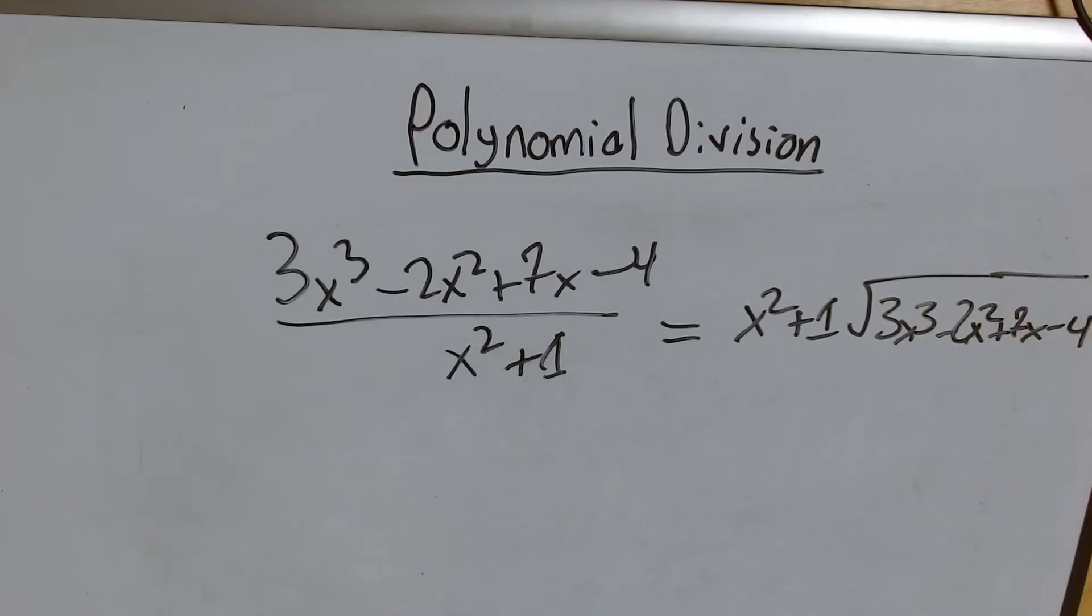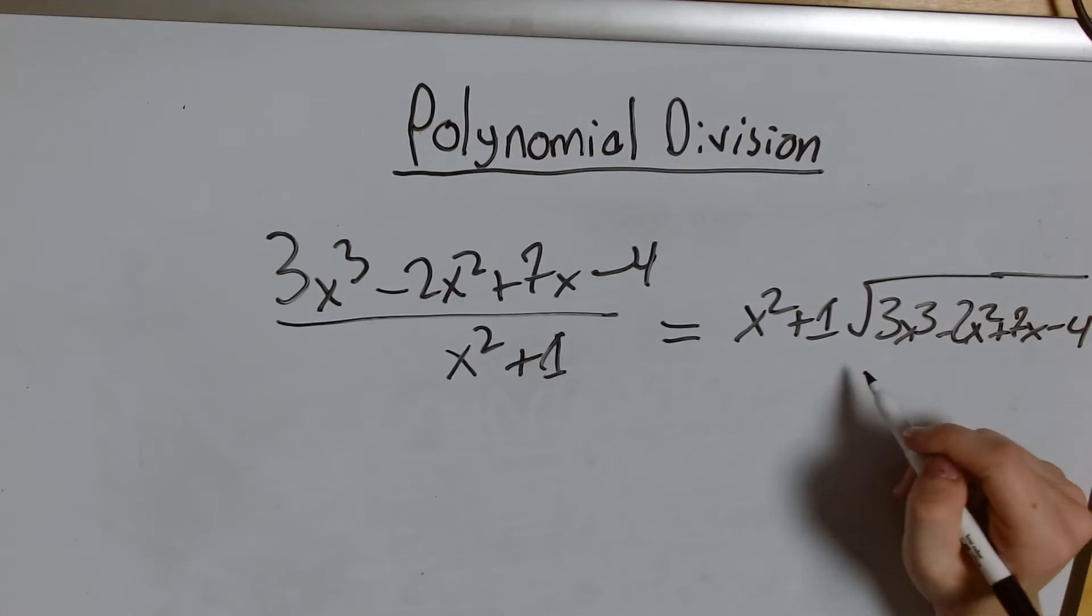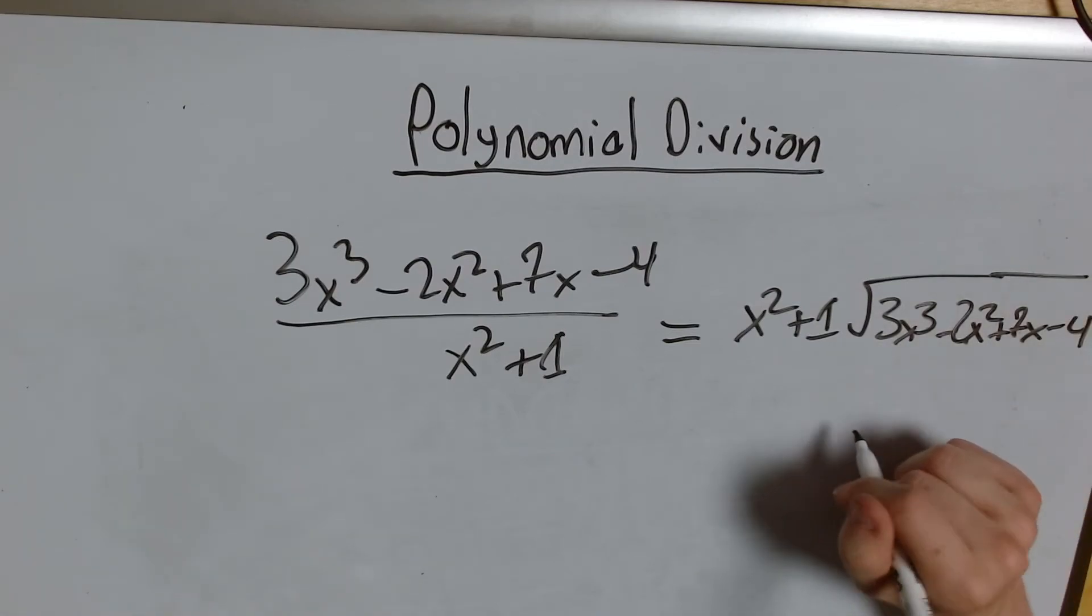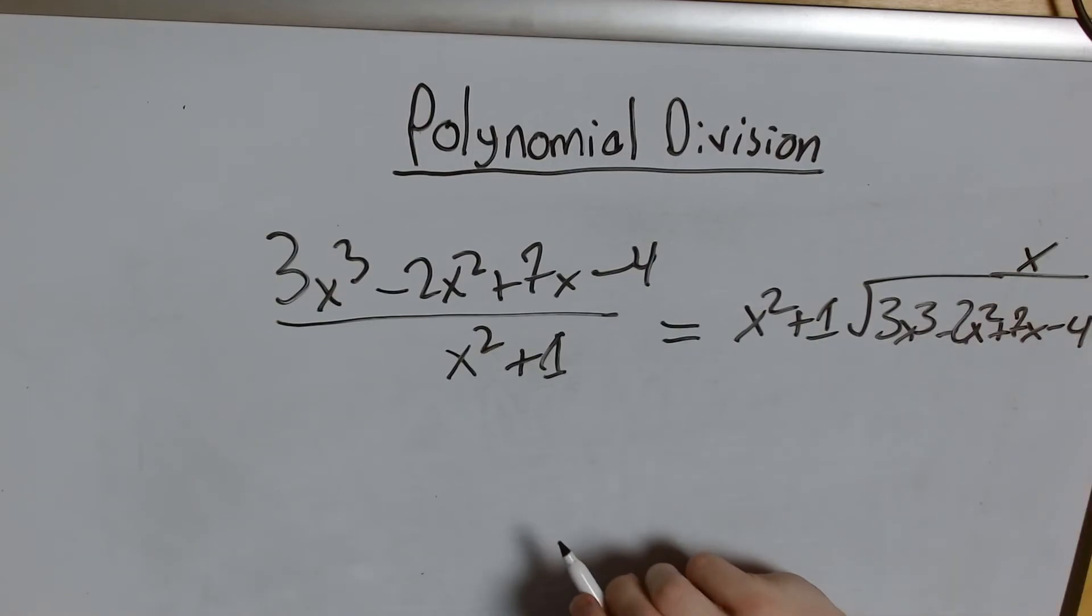Okay. What do we do? So we want to get rid of this x squared. We have a 3x cubed. First thing we want is to have x cubed on both sides. That means we have to multiply by x. We'll put an x right there.